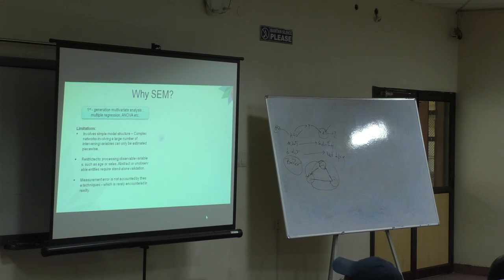Next, measurement error. There is no measurement error. That's what we talked about till now. Individual observed data points, we are not calculating error. So measurement error is not looked at. These three are the basic limitations in your first generation multivariate analysis.